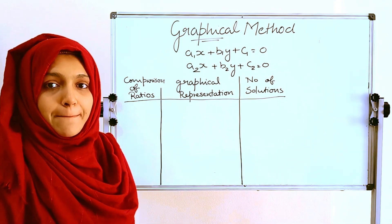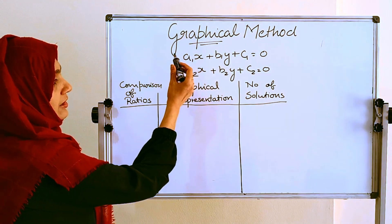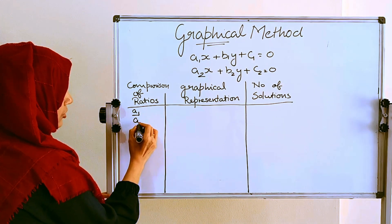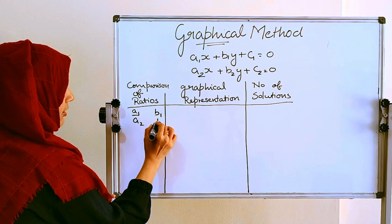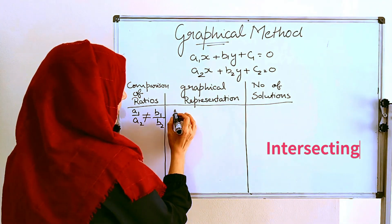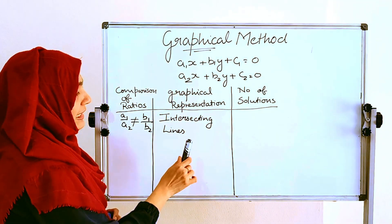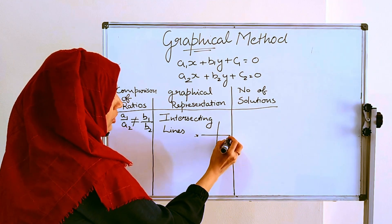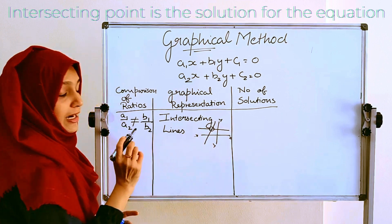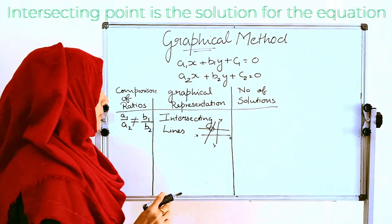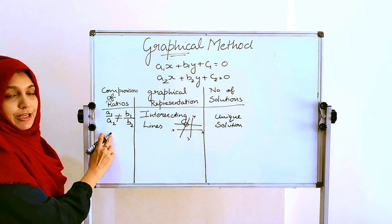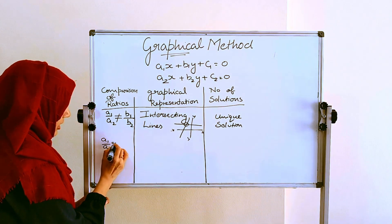We compare the coefficient ratios: a1 by a2 and b1 by b2. When a1 by a2 is not equal to b1 by b2, the graphical representation gives intersecting lines. If we draw a graph for these two equations, we will get intersecting lines. The lines will be intersecting, and at that intersecting point we get the solution. So the number of solutions will be unique — only one solution.